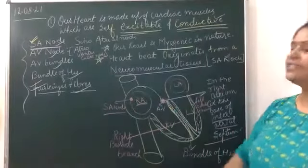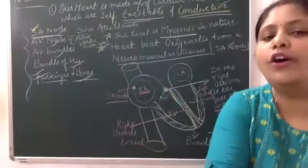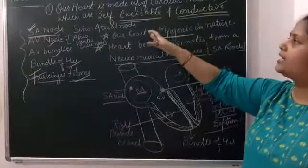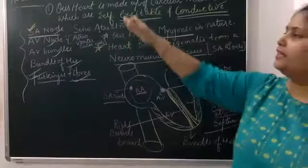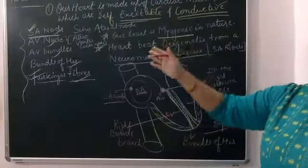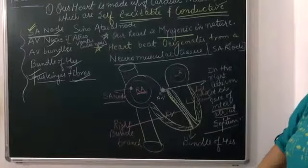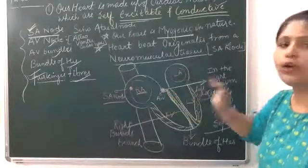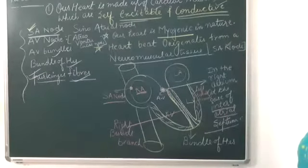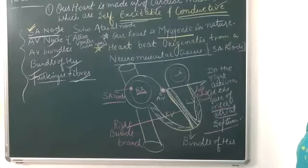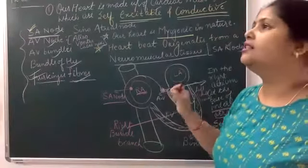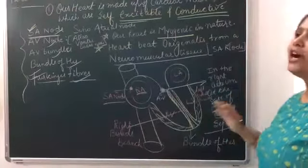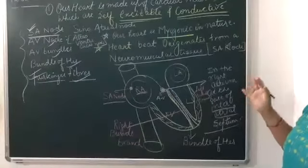Basically, this is all about how excited heart muscles are being excited and how the wave is carried throughout the heart by the SA node, AV node, Bundle of His, and Purkinje fibers. The nodal musculature — the AV node and SA node — has the ability to generate action potentials without any external stimuli. This is one of the most important statements: it is auto-excitable.